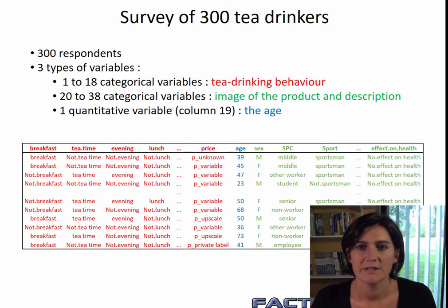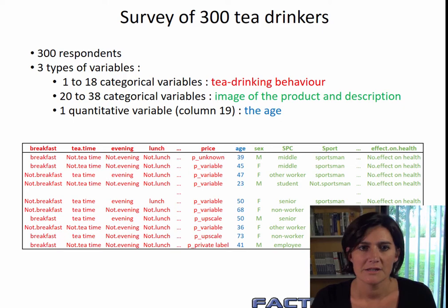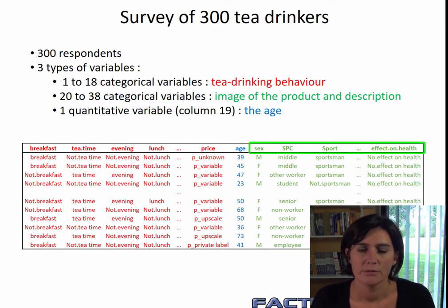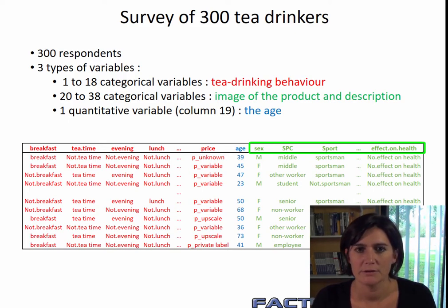Then there were questions about the image people had about tea. And lastly, questions about the people themselves. For example, sex, socio-professional category, whether they do sport or not. Age, coded as the qualitative variable age_q, in age brackets.